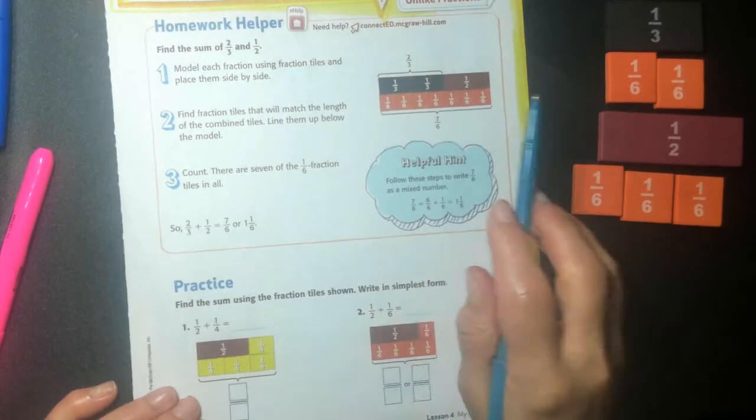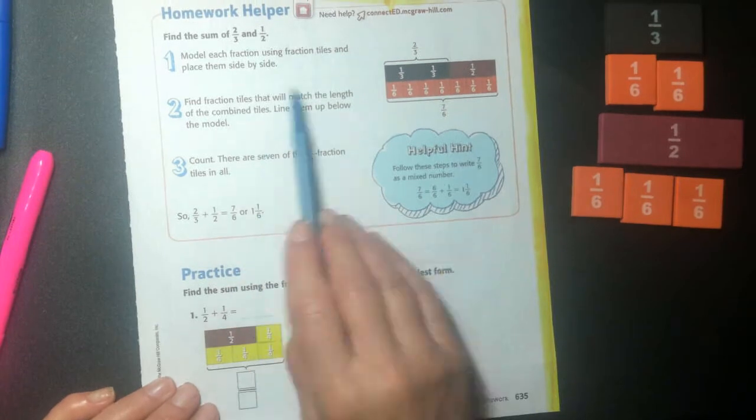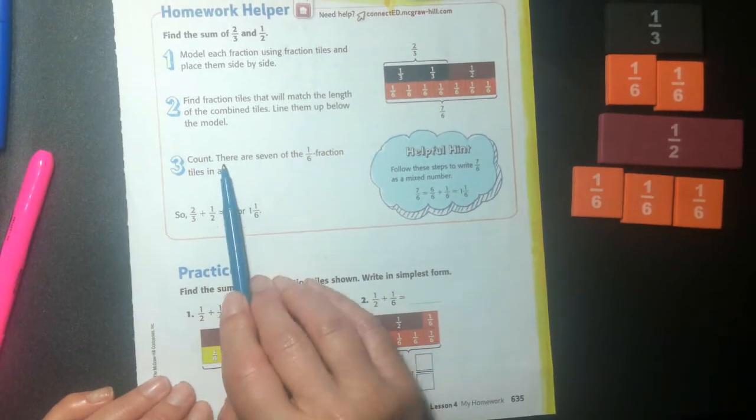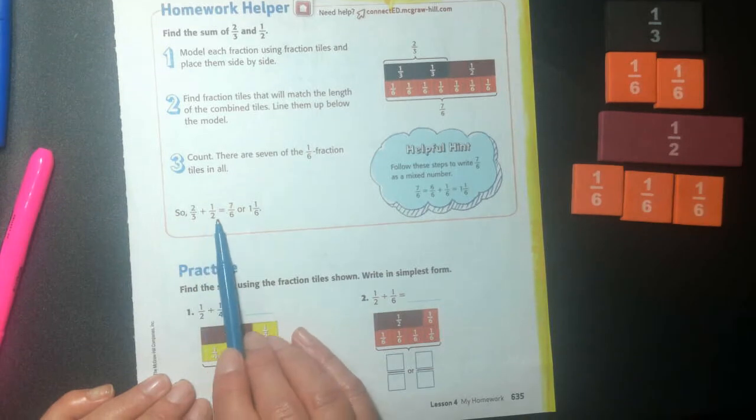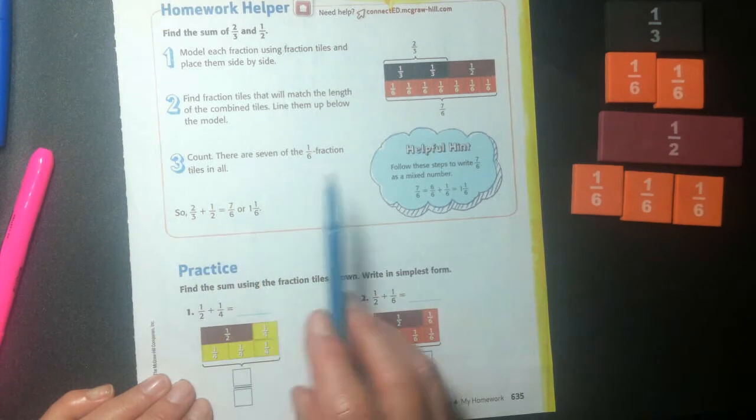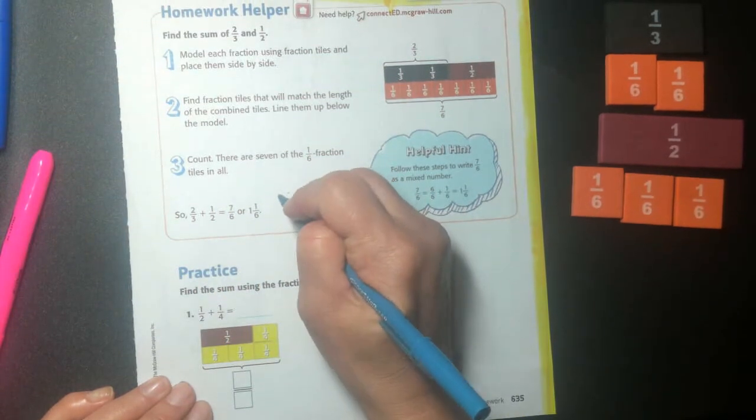It's an improper fraction. Hopefully your alarm in your head is going off. What? Okay, so count. There are seven of the one sixths fraction tiles in all. So we're going to add them, and then we have seven sixths, right? So I can't leave it an improper fraction.